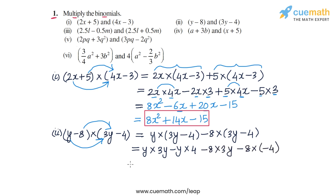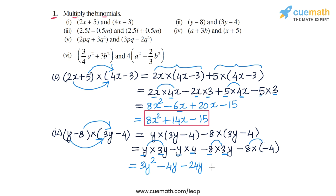Now let's find the values. y into 3y is 3y squared, because y times y gives y squared. Then minus y into 4 is minus 4y. Minus 8 into 3y: minus 8 times 3 is minus 24, so minus 24y. And minus 8 into minus 4 is plus 32.